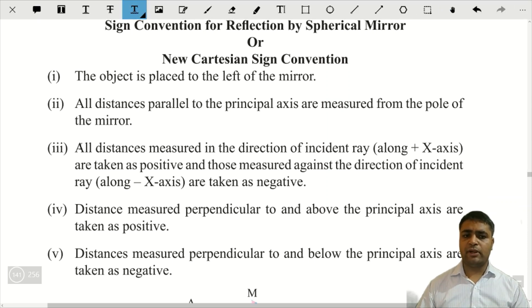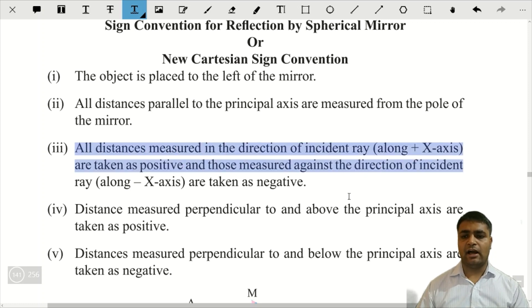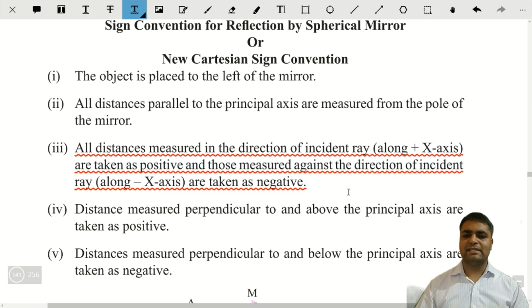The third point is that all distances measured in the direction of incident ray along the positive x axis are taken as positive and those measured against the direction of incident ray, that is, minus x axis are taken as negative.